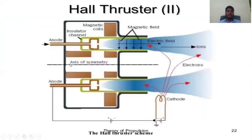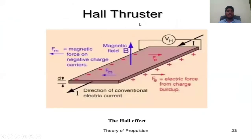Hall thruster diagram: magnetic field, electric field, ions, electrons, cathode. Hall thruster scheme showing axis of symmetry, anode, insulator channel, and magnetic coils. Hall thruster equation: FM = magnetic force on the charge carriers in magnetic field B. FM ≈ FE (electrical force from charge build-up). Direction of conventional electric current and displacement shown.